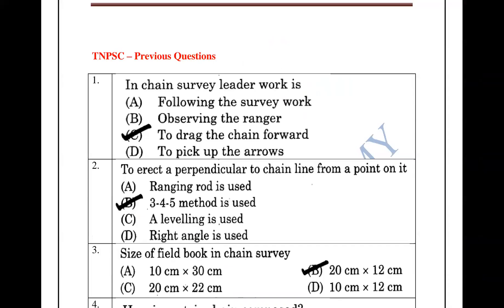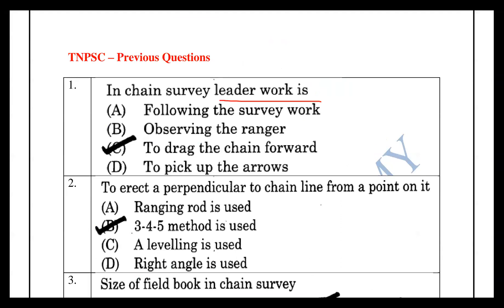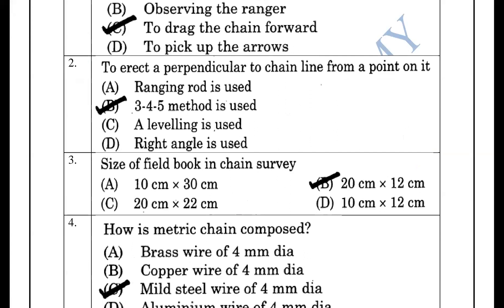The leader works to track the chain forward in the forward direction, while the follower works to follow. Next, we look at the perpendicular to the chain line.